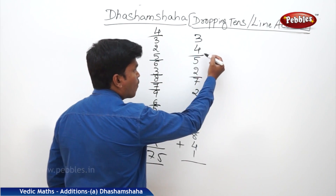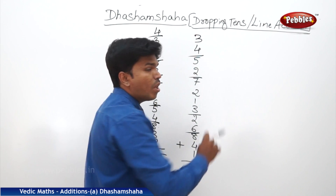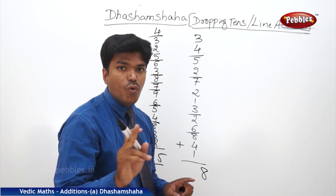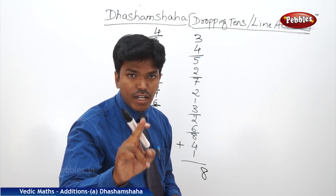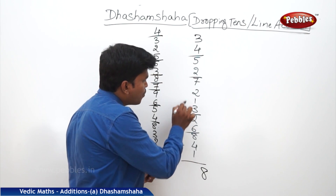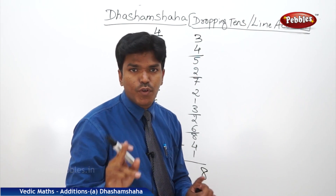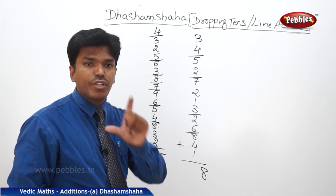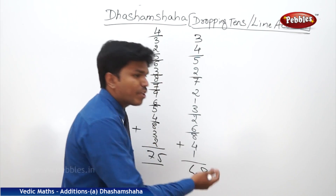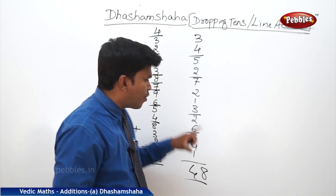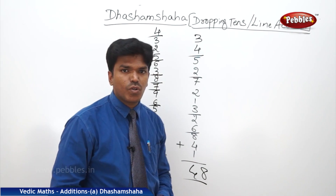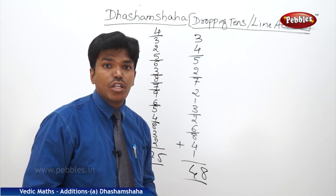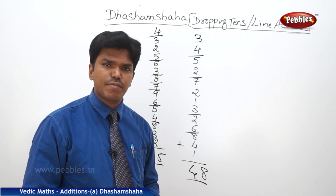Remaining is 1. 1 plus 4? 5. 5 plus 3? 8. Lastly, remaining is 8. Write 8 here. Now count how many number of 10s there are. Don't count slowly — 1, 2, 3, 4 — don't count like this, it takes the same time. Count 2 or 3 tens at a time. So 2 plus 2? 4. So the answer is 48. That's how we count. Don't count slowly; at a time count 2 or 3 tens so you save time and can do it fast.